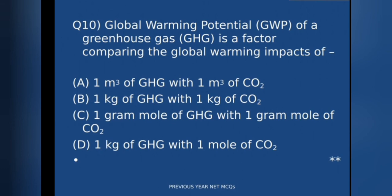The 10th question: global warming potential (GWP) of a greenhouse gas is a factor comparing the global warming impacts of — A) one cubic meter of GHG with one cubic meter of CO₂, B) one kg of GHG with one kg of CO₂, C) one gram mole of GHG with one gram mole of CO₂, or D) one kg of GHG with one mole of CO₂. The correct answer is option B. One kg of a greenhouse gas is compared with one kg of carbon dioxide to determine its GWP. The GWP of CO₂ is considered as 1, which serves as the reference for all other greenhouse gases.